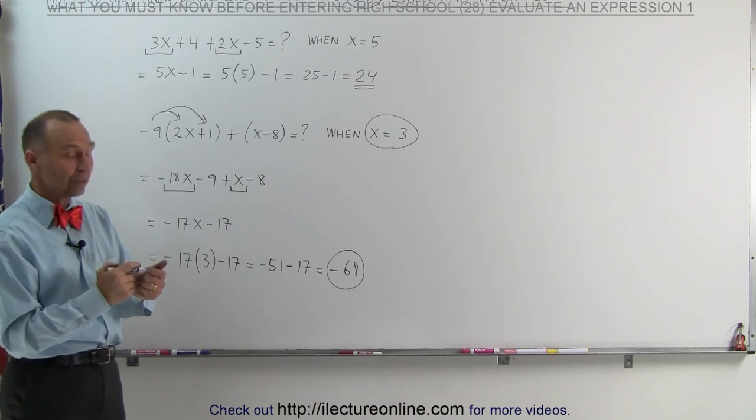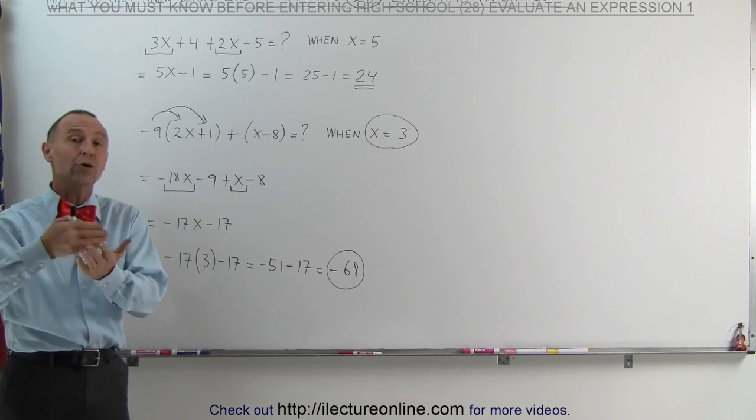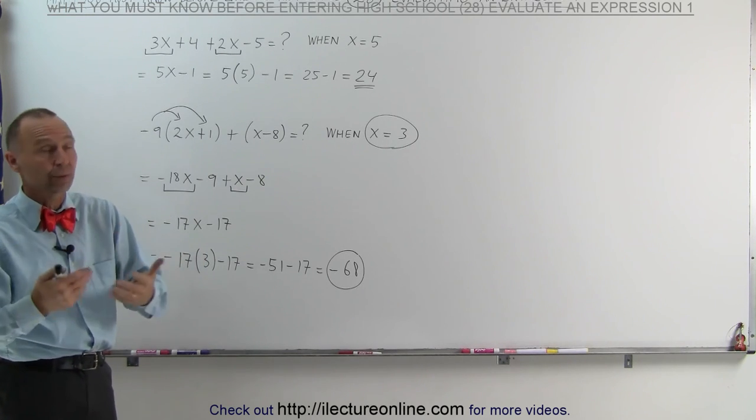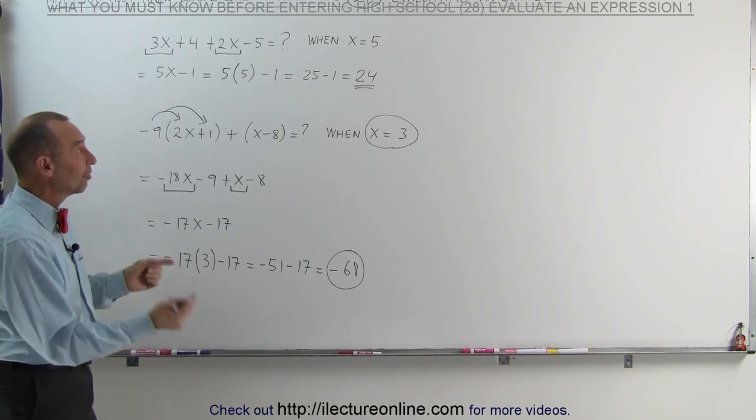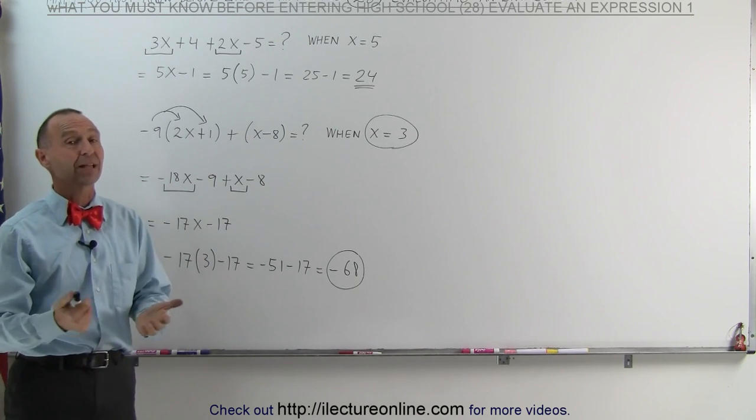So now you also know what they mean when they say evaluate an expression. They need to give you the value for the unknown quantity. If there's more than one, they need to give you the value for both or all three or however many there are. You substitute those numbers in and then you simply add them together. That's how it's done.